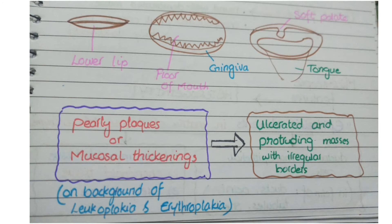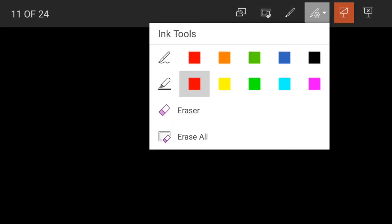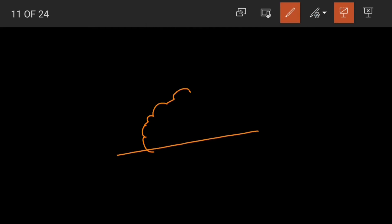Gradually, as the squamous cell carcinomas grow in size, they appear as ulcerated and protruding masses with irregular borders. These large masses develop on the mucosa and can be ulcerated as well.